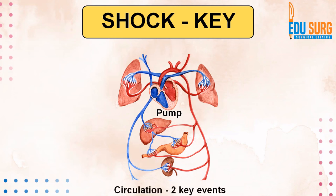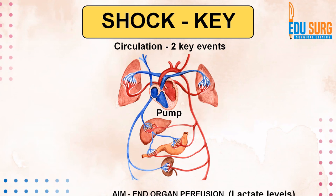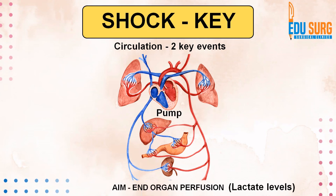Just a very basic overview of the circulatory system — we have to understand that this system has two key events. One is the relationship between the heart and the body, and the other is the relationship between the heart and the lungs. There are two important parts to understand in the circulatory system, and this has implications on management. The aim of circulation, as we all know, is end organ perfusion — to provide blood to every nook and corner of the body. It is this end organ perfusion that we assess practically when we look at lactate levels.